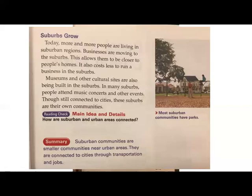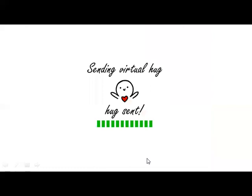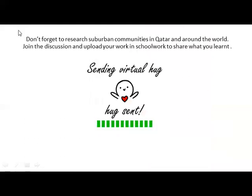So what's the main idea in detail? The question is: how are suburban and urban areas connected? You can answer this question in the discussion today and also read the summary — you can pause and read the summary on this page. Well done, grade three. I want you to research about suburban communities in Qatar. I'm going to share some links with you, and I'll also share some links about suburban communities all around the world. Please do not forget to join the discussion and upload your work to share what you've learned.